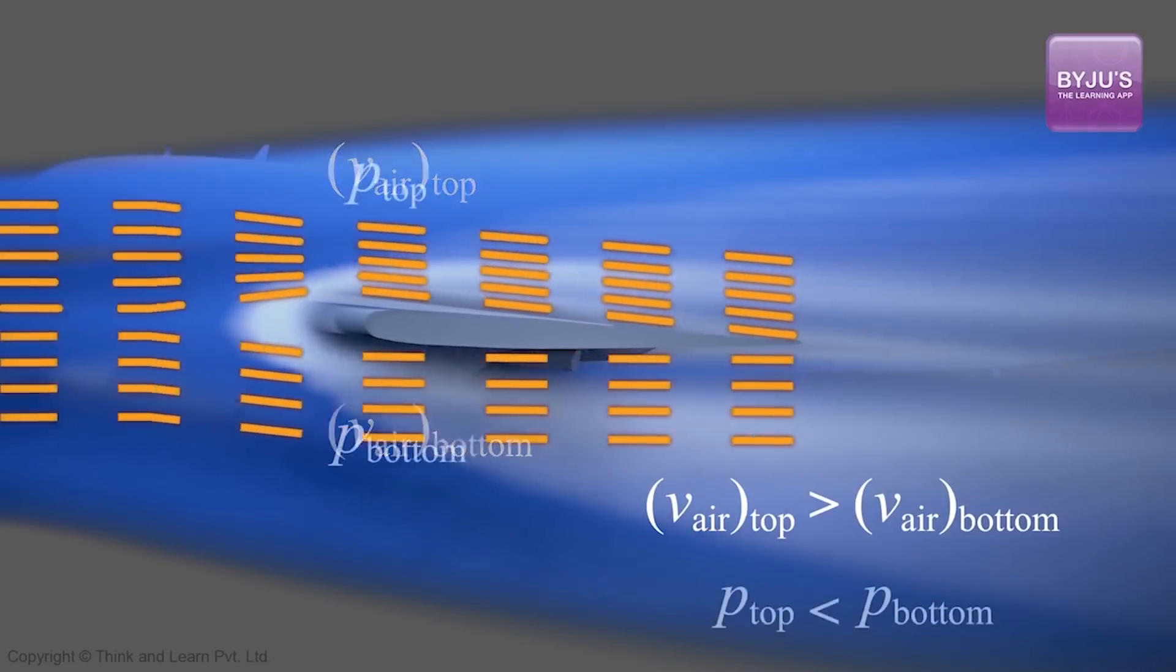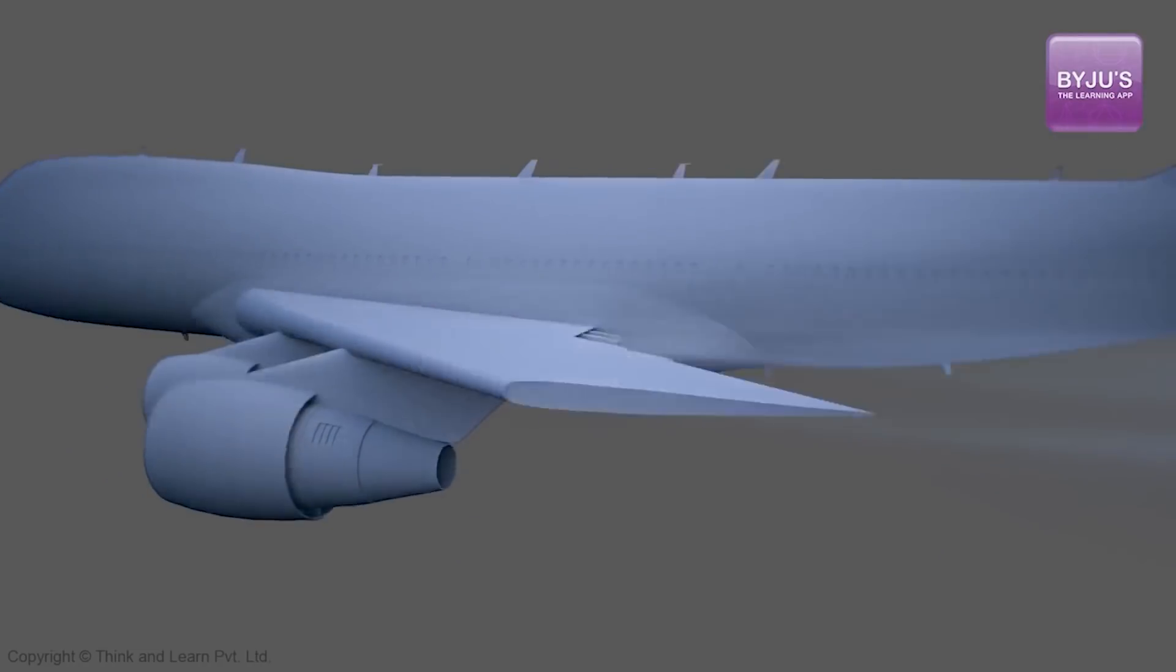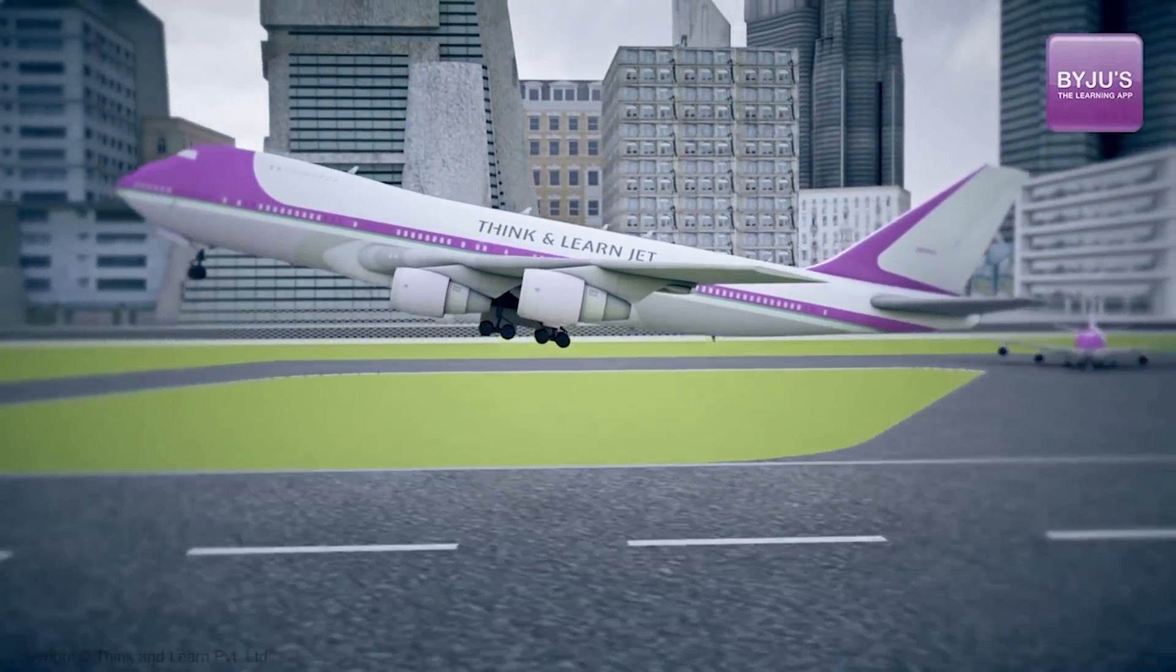This, therefore, leads to a pressure difference, just like we saw in the previous case, with the pressure on top being less than the pressure at the bottom. And of course, a greater pressure difference means a greater force. And that means net force is upwards. This upward force is what we call lift. And so, we have take off.